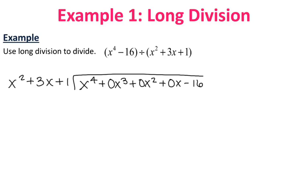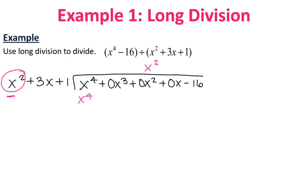Now we can start the process of long division. I'm going to focus on my first term and compare it to the leading term of the divisor — what times x squared gives me x to the fourth? That's x squared, so I write x squared on top, lined up above the x squared term. I then multiply that x squared by the entire divisor: x squared times x squared gives x to the fourth, times 3x gives plus 3x cubed, and times 1 gives plus x squared. Whatever you put on top, you multiply by all terms of the divisor.